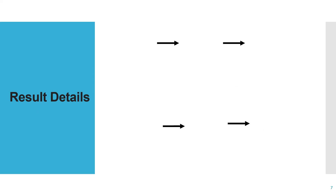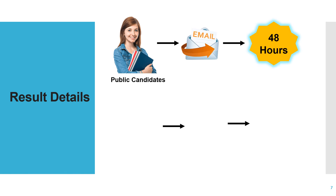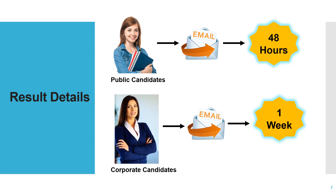Now the most important question: when do we get the results after appearing for the exam? Those who have registered using the public option will get their results mailed within 48 hours, and corporate candidates will get their result sent to the coordinator, which takes about a week.